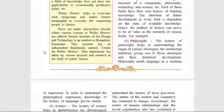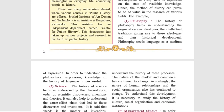The first one: philosophy. The history of philosophy helps in understanding the origin of various ideologies, the traditions giving rise to those ideologies and their historical development. Ancient people tried to speculate the relationship between the universe and humans. This speculation gave rise to many myths about the origin of the world and human life. Deities, rituals and philosophical explanation of rituals also gained importance. The knowledge of the history of language in which it is expressed helps us understand these philosophical expressions.